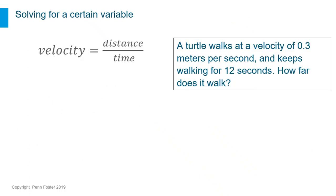Formulas could be rearranged to help you solve for any of the variables. For example, in this problem, a turtle walks with a velocity of 0.3 meters per second and keeps walking for 12 seconds. You know velocity and time, and can use the formula velocity equals distance divided by time to figure out how far the turtle walked.